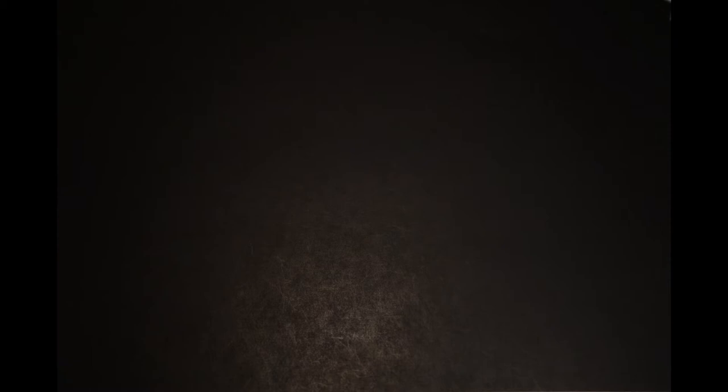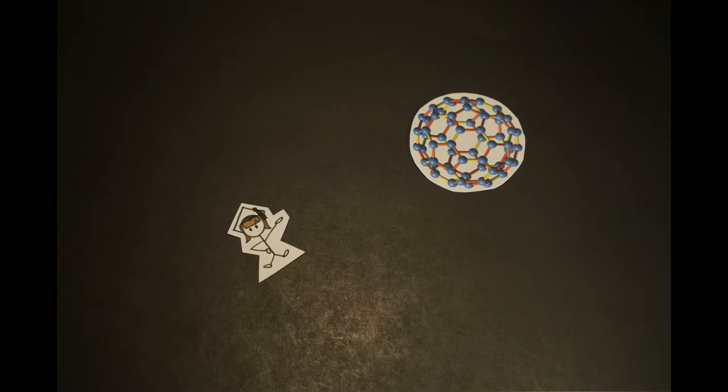But that wasn't the only thing the scientists found. In their data, they found a stable particle, carbon-60. Other scientists had found carbon-60 too, but nobody knew what it looked like. So Curl, Smalley, and Kroto went to work to try and make a polygon of carbon-60.